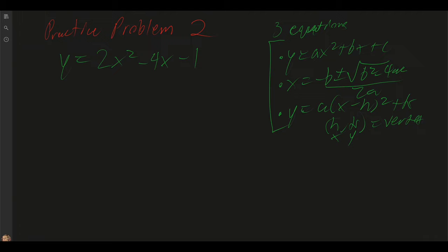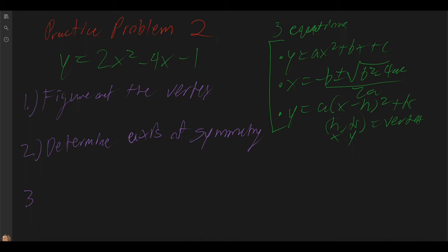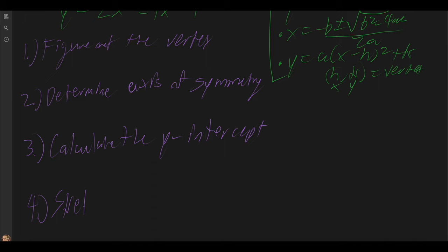To figure out what we need to do, the steps we need to follow are: one, figure out the vertex; two, determine the axis of symmetry; three, calculate the y-intercept; and finally, sketch the graph.